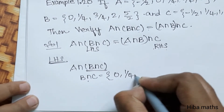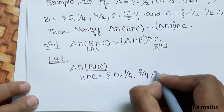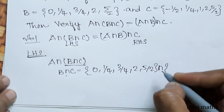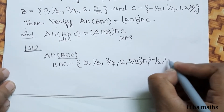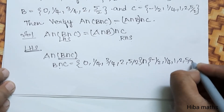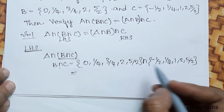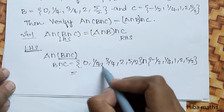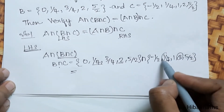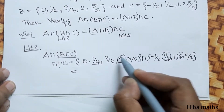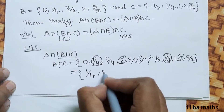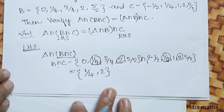B intersection C: B = {0, 1/4, 3/4, 2, 5/2} intersection C = {-1/2, 1/4, 1, 2, 5/2}. We find the common elements. 1/4 is common and 2 is common. We can circle them with a pencil. So B intersection C = {1/4, 2}.